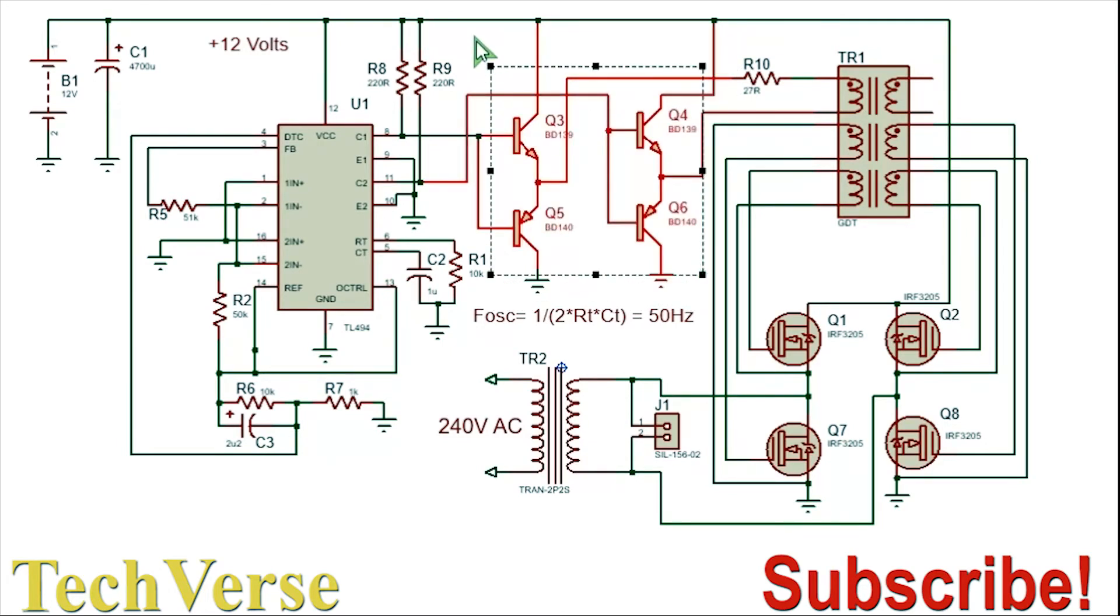So when there's a low signal at pin 8, when output transistor one is high, this means that Q3 will be off but Q5 will be on.